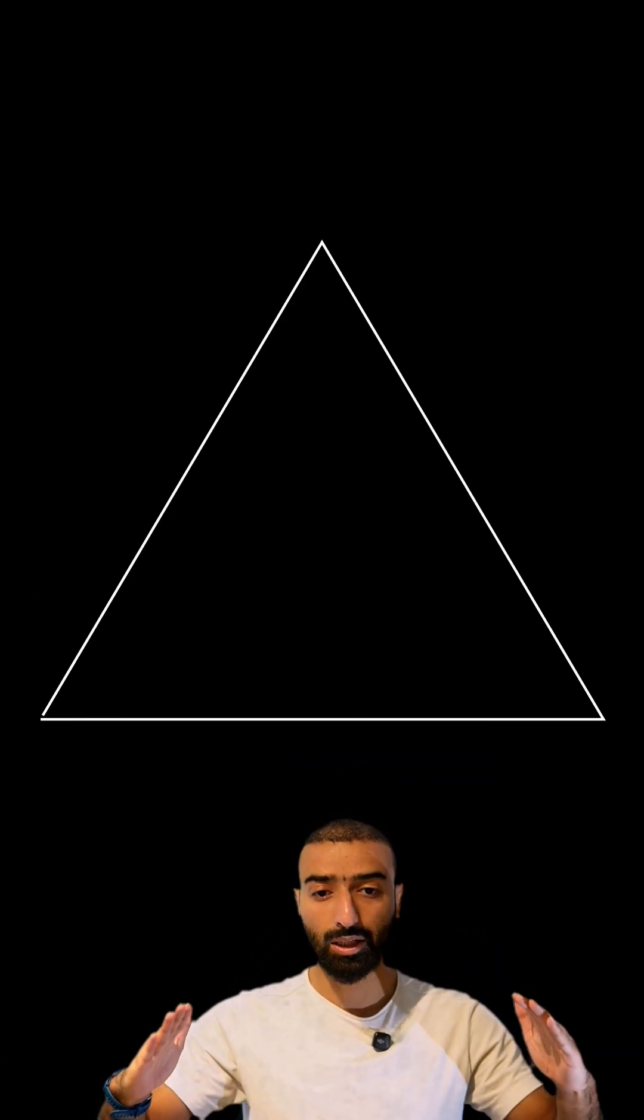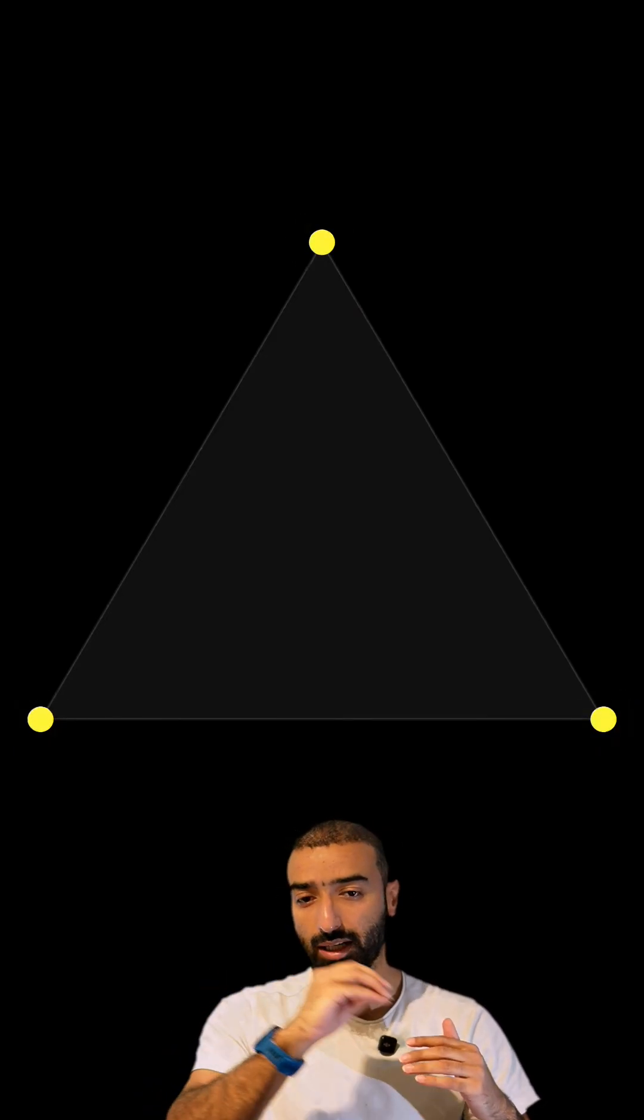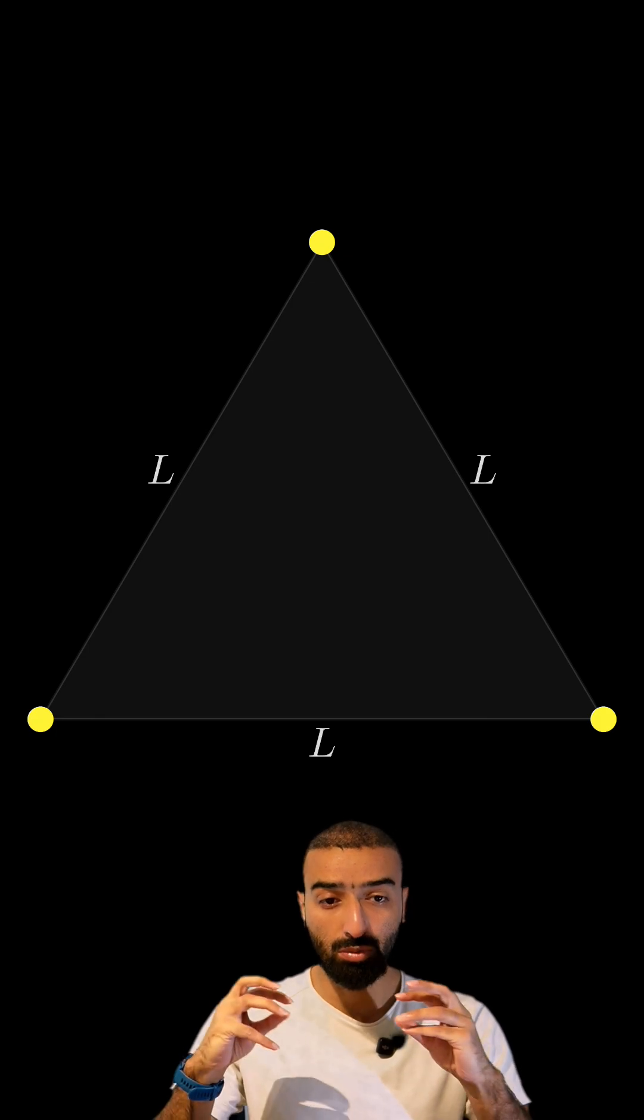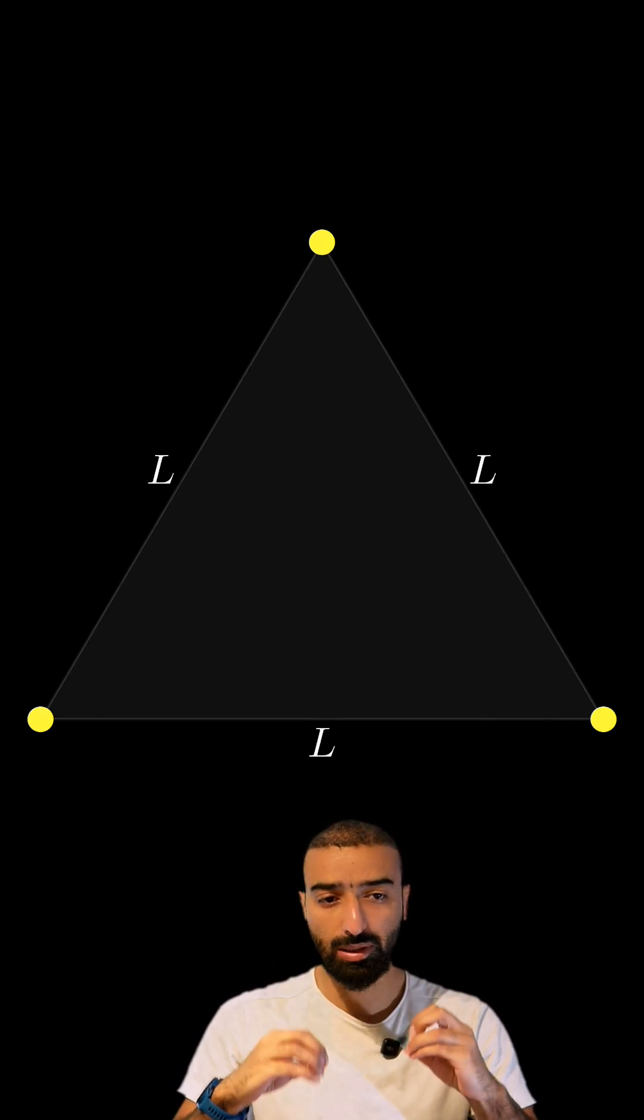We begin with an equilateral triangle of side length L. At each vertex, we place a particle. All three particles move with the same constant speed, v.